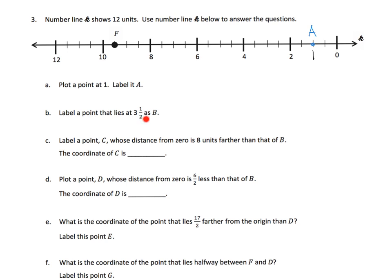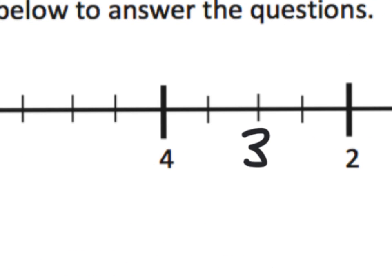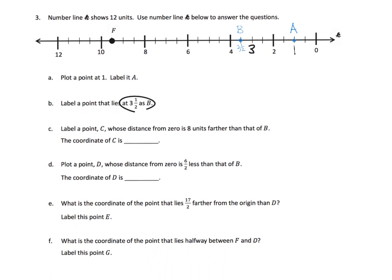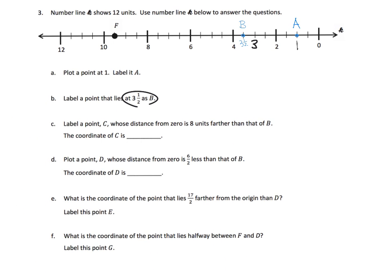And now what you're going to do is you're just going to go through all of these questions and label your points. So label a point that lies at three and a half. Okay, well if here's zero, here's one, here's two, here's three, so three and a half is between three and four. And so that's going to be point B. And so we're going to zoom in and B is going to be right here at three and a half.